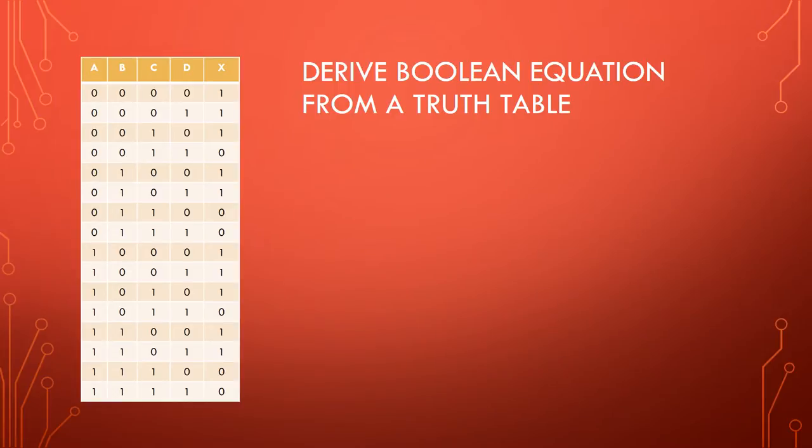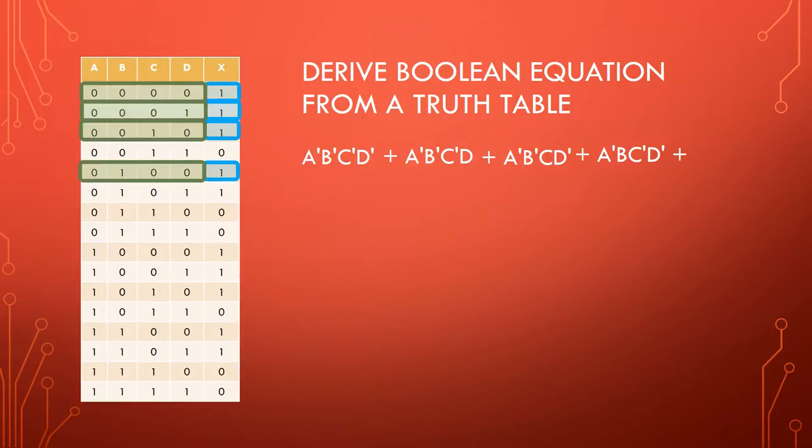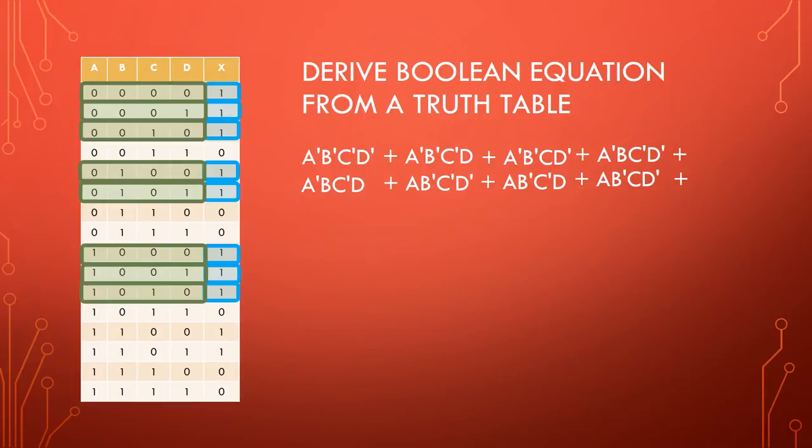First, we need to derive the equation from the truth table. In order to do this, we must first locate the minterms and add the input highs and lows for each, and then OR the added minterms together to create a sum of products equation.